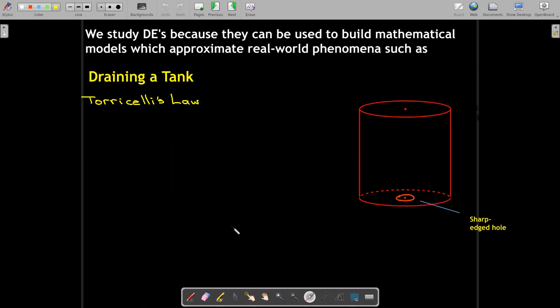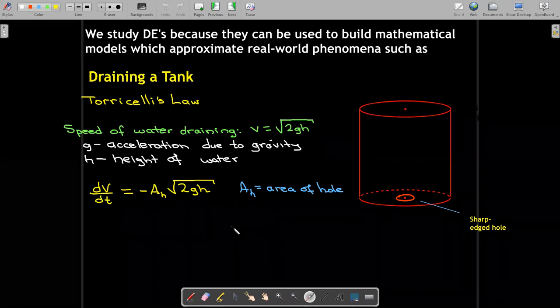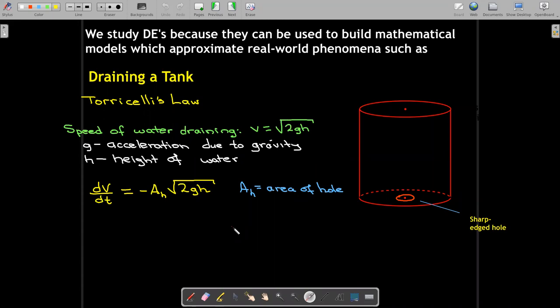A different application, which you might not have seen, is draining a tank through a sharp-edged hole. And it depends on Torricelli's law, which says that the speed of the water draining is going to be V equals radical 2GH. G is our acceleration due to gravity. H is the height of the water in the tank. So normally we might want to solve this for the height, how fast or at what rate of change is the height changing throughout time. And so we can easily find the rate of change of volume. It makes sense that it would be negative and you would just take the area of the hole times the rate at which water is leaving the tank, which is that velocity radical 2GH.